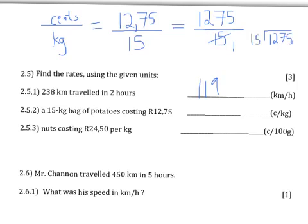We need to do 1275 divided by 15. 15 doesn't go into 1 or into 12; 15 goes into 127 eight times with a remainder of 7. Then 15 goes into 75 five times. So 1275 divided by 15 equals 85. We now have the correct rate: 85 cents per kilogram.